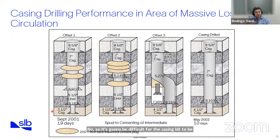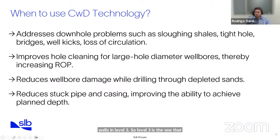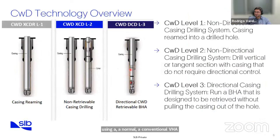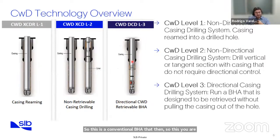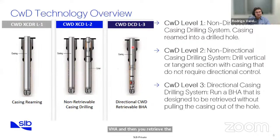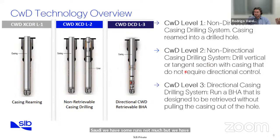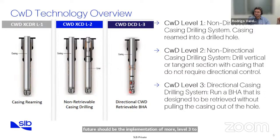Casing drilling level three will be the future — it uses a conventional BHA below the casing, drilling with trajectory work, and then the BHA is retrieved. Level three is being implemented quite a lot now in Abu Dhabi, and in Saudi Arabia there are some runs. The future should be more level three implementation to enable easier runs and faster ROP.